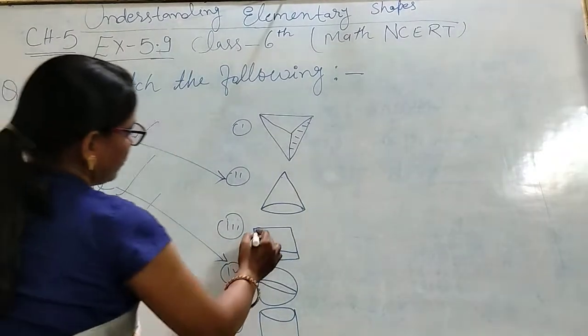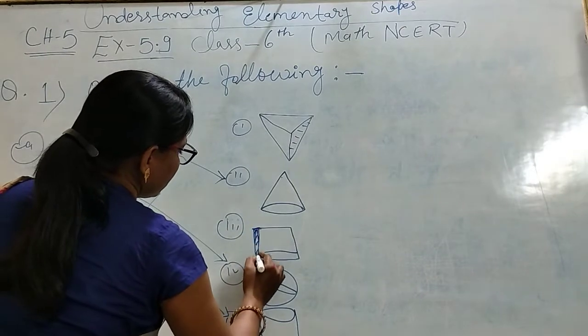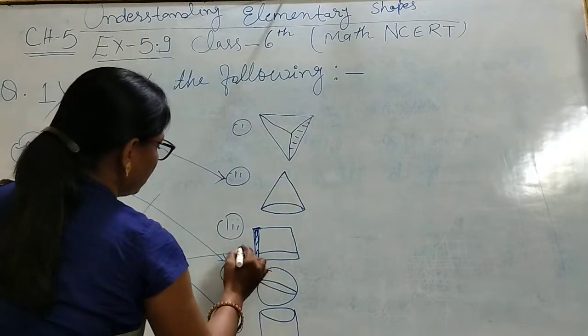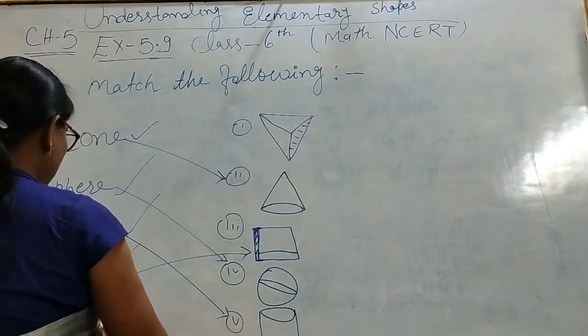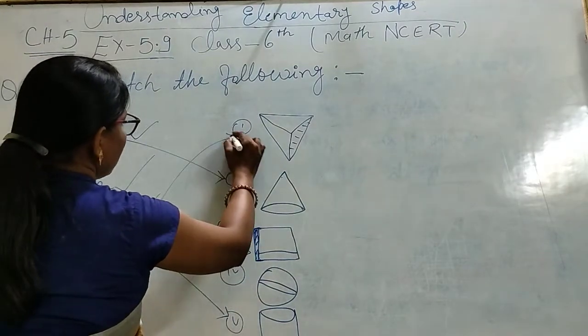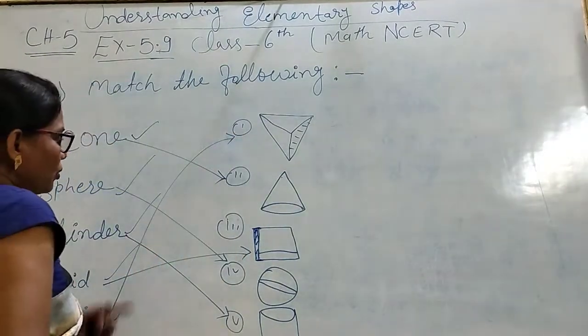Cuboid is where? This is the figure. And the last one is pyramid. Where is the figure? The figure is where? This is the figure.